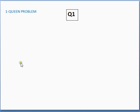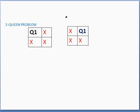We'll consider examples for different numbers of queens. If we have only one queen, we take a 1×1 chess board and there is no question of attacking queens, as there is only one queen that can be placed successfully.